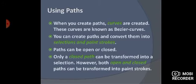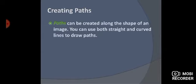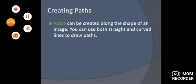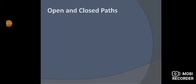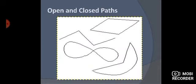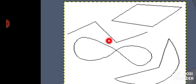Next: creating paths. Paths can be created along the shape of an image — following the outer edge of whatever shape it is. You can use both straight and curved lines to draw paths. Looking at the picture of open and closed paths: one open path is open on both sides, while the other three are closed paths.